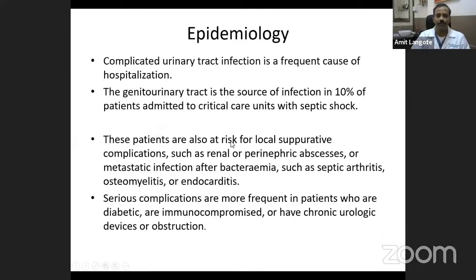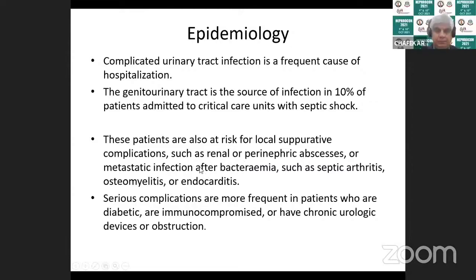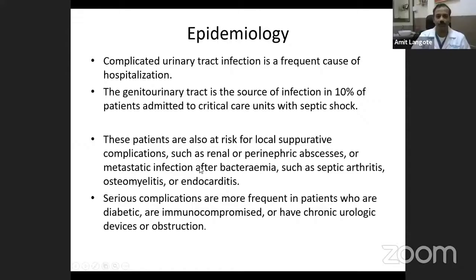Complicated UTI is a frequent cause of hospitalization and accounts for almost 10% of ICU admissions with septic shock from genitourinary tract infections. These patients are at risk for local complications like renal abscess or perinephric abscess, or the infection can spread through the blood causing septic arthritis, osteomyelitis, or endocarditis. Serious complications are more frequent in patients who are diabetic, immunocompromised, have a chronic urological device, or have obstruction of the urinary tract.